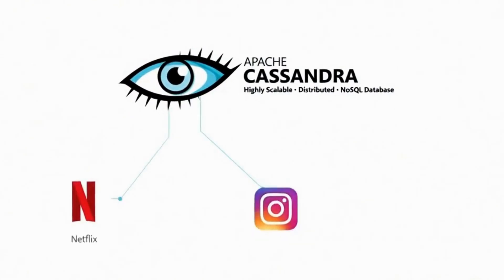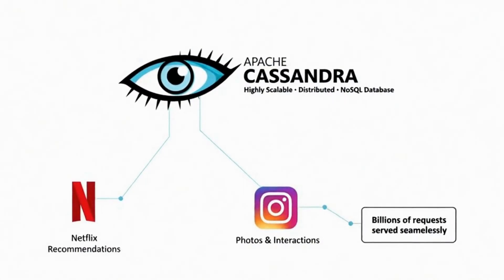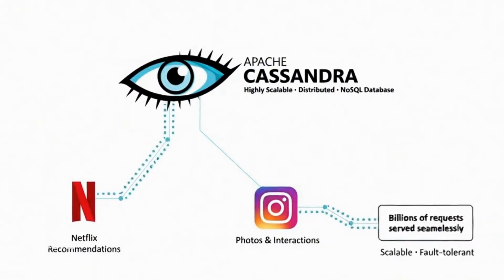Apache Cassandra is the most well-known example, used by Netflix to recommend shows, and by Instagram to handle billions of photos and user interactions.